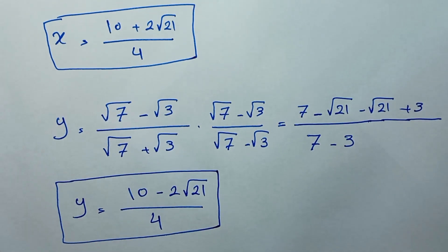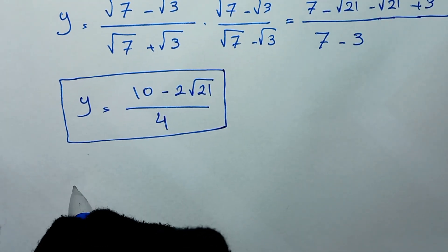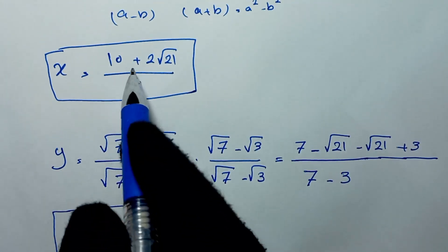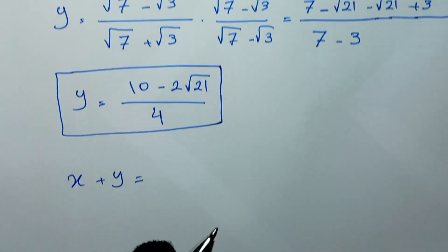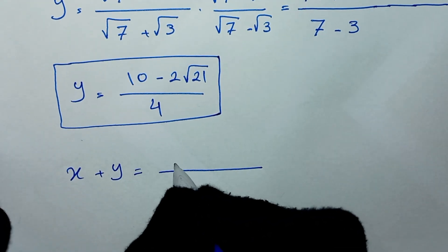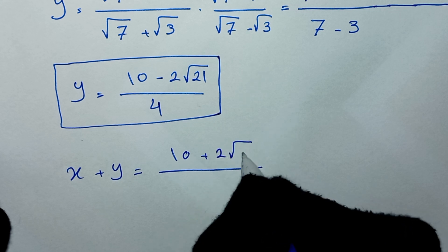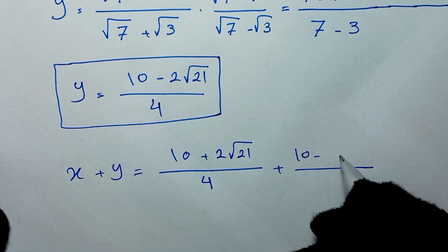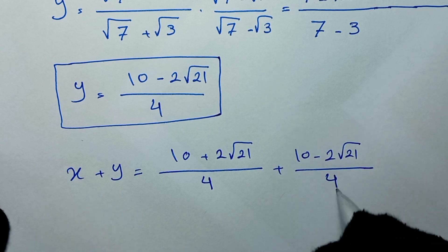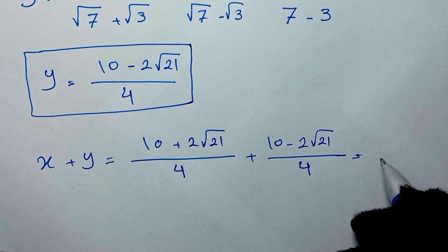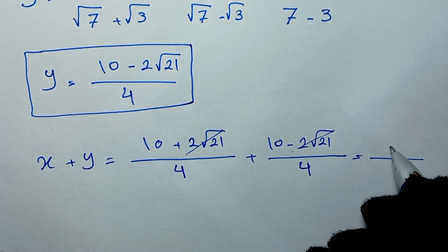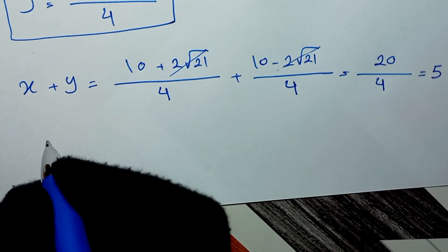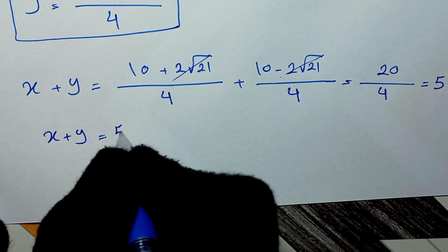In the next step, we add x and y. So x plus y equals 10 plus 2 square root of 21 over 4, plus 10 minus 2 square root of 21 over 4. The square root of 21 terms cancel each other, leaving 20 over 4, which equals 5. So x plus y is equal to 5.